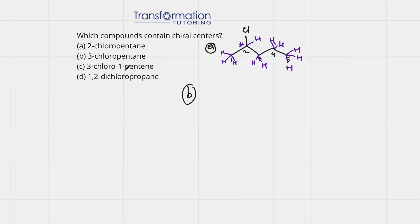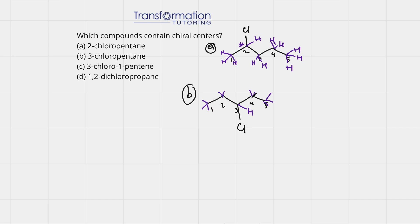Let's go to B: 3-chloropentane. Again we draw a pentane molecule, number it 1, 2, 3, 4, 5, and 3-chloro means there is a chlorine on carbon 3. I'm going to show all the hydrogens. Again, any carbon that has two or three hydrogens can be disregarded — it cannot be a chiral center because it will not have four different substituents. The only carbon we would be looking at is carbon 3. It has a hydrogen and a chlorine. On the left it has two carbons and on the right it also has two carbons — the left and the right are the same. Therefore this carbon is not chiral, and this molecule does not have any chiral centers.